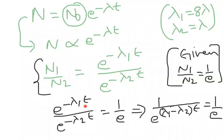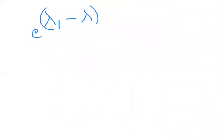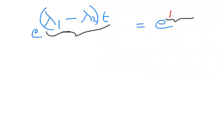Bringing e^(-λ₁t) from the numerator to the denominator changes the sign, giving e^(λ₁ - λ₂)·t. Taking t as common, we get (λ₁ - λ₂)·t in the exponent. Since the base e is the same on both sides, the powers must be equal: (λ₁ - λ₂)·t = 1.